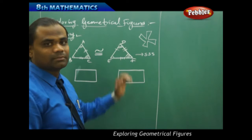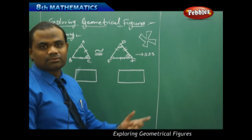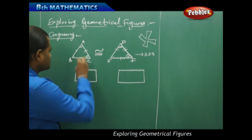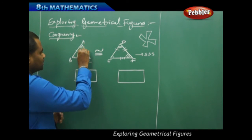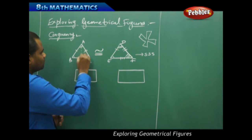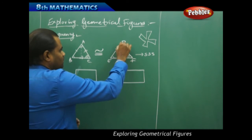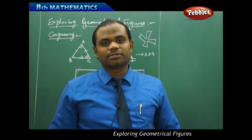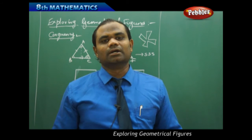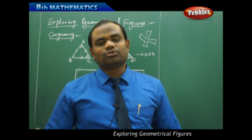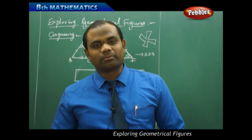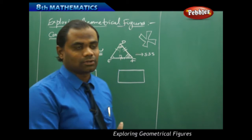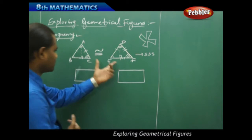Their areas would be the same, their angles would be the same, the line segments would be the same, and the perpendicular heights drawn from one of the vertices will also be the same. There are many properties which become similar when two geometrical objects are congruent. That is how congruency holds for triangles.